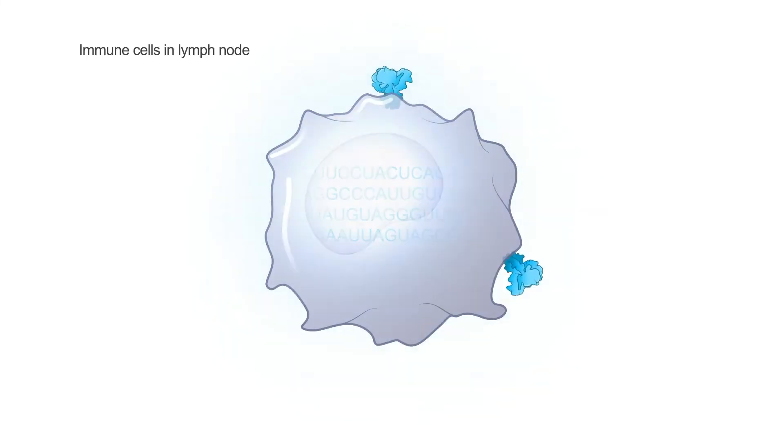We're delivering the messenger RNA directly into the cytosol, not altering the DNA indeed. And the ribosomes then translate that delivered messenger RNA sequence to create protein that's expressed on the surface of the cell.